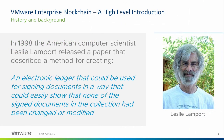The roots of blockchain began around about 1998 when an American computer scientist called Leslie Lamport released a paper. It described a method for creating an electronic ledger that could be used for signing documents in a way that could easily show that none of the signed documents in the collection had been changed or modified. His original intention was to have documents that could be edited by multiple people in a government or central authority, combined into a finished document with proof it hadn't been tampered with. So he was going to put governance and provenance around electronic documents for government.